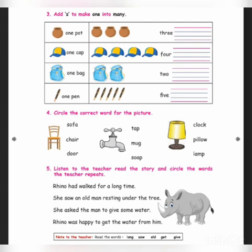She asked the man to give some water. Rhino was happy to get the water from him. 'Get' is also there — you should circle 'get'. This is the way you should do the book exercise daily. At your home, in your rough note, try two times. Thank you.